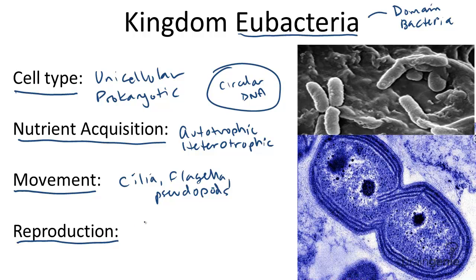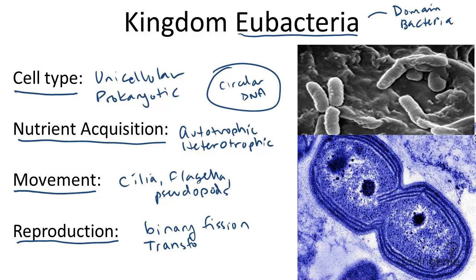How do organisms in the eubacteria kingdom reproduce? Well, genetic recombination can happen in a few ways. But most reproduce by binary fission, which lacks genetic recombination. If they want to exchange DNA, not that they do it on purpose, they can get some diversity through three techniques.